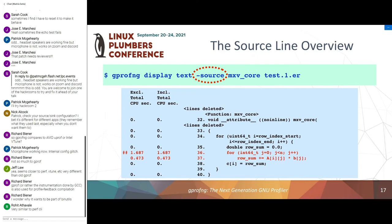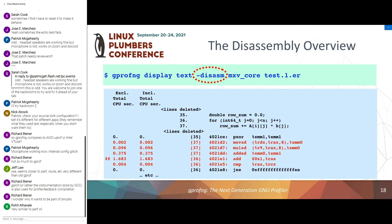You can get source-level information with the 'source' command, showing source lines with timing data. Two hash symbols mark the most time-consuming lines, making them easy to find. We also have a command to get the most time-consuming source lines and instructions specifically. Likewise you can get disassembly — when you've compiled with '-g', we interleave source code with the disassembly; otherwise you get pure disassembly. The marker shows the most expensive instruction.